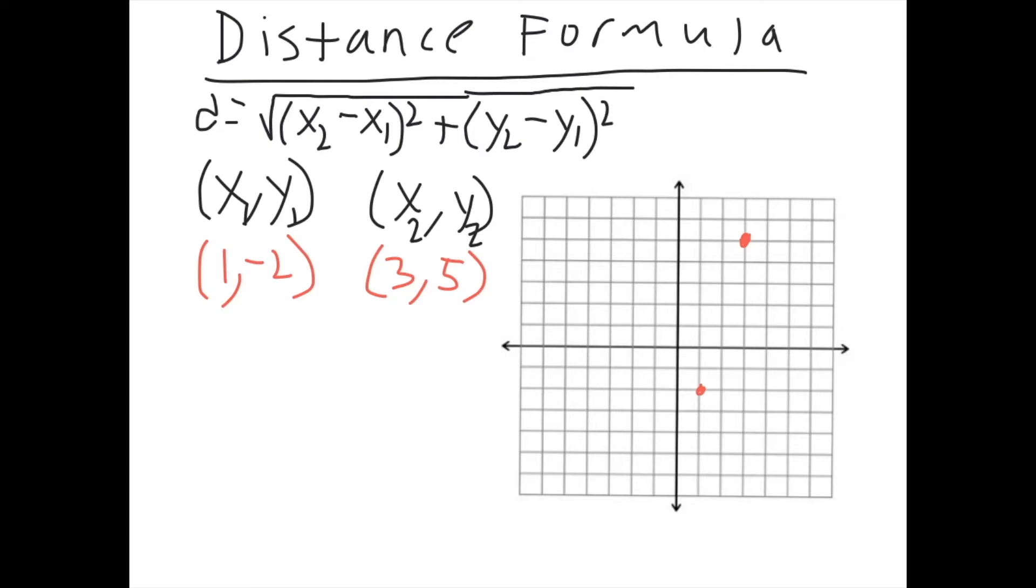And now we plug it into the distance formula. We want to know if we were to make a line from this point to this point, how long would that line be? So we're going to put it in the distance formula. So we have the square root of x2 minus x1. So 3 minus 1. So 5 minus negative 2, or 5 plus 2 squared.